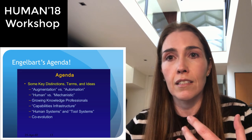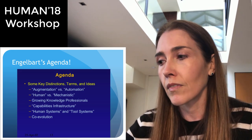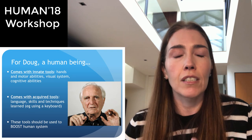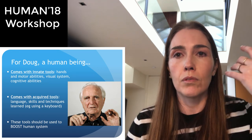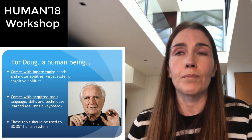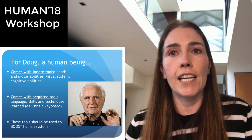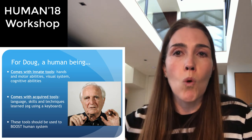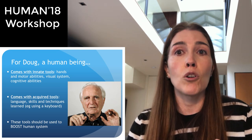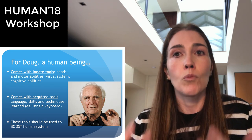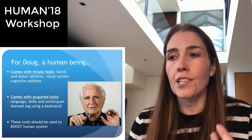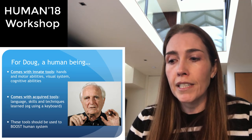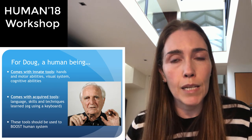For Doug, a human being comes with some innate skills. The human system has some innate capabilities — for example, the capacity to hear, the capacity to see, and the ability to use our hands, which work well with the visual system. We also acquire tools along the way. We're not born with the ability to speak, for example — language is acquired. He actually uses a software metaphor for this, calling it 'installing' language into the human system.